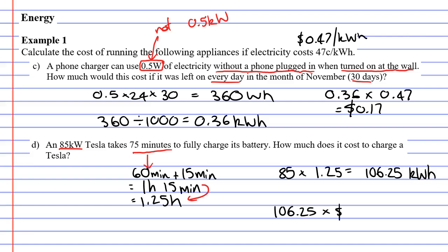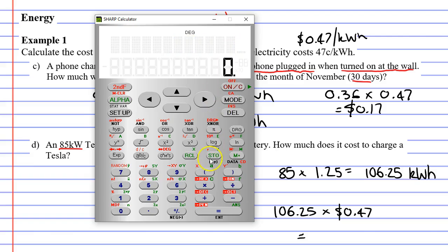and we multiply it by our cost, 0.47, our cost per kilowatt hour. Let's see what we're going to get. How much does it cost to charge a Tesla?